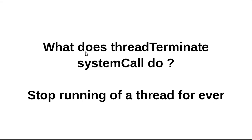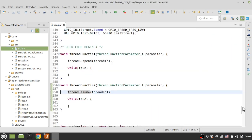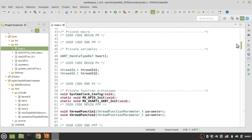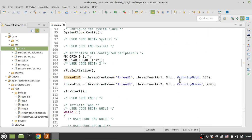What does the thread terminate system call do? It stops the running of a thread forever. When you terminate a thread you cannot return the thread to the ready list another time — by using thread terminate you can kill a thread forever. Let's see an example. Assume we have thread one and thread two; thread one priority is high and thread two is normal, but I want to kill thread one by using thread terminate.